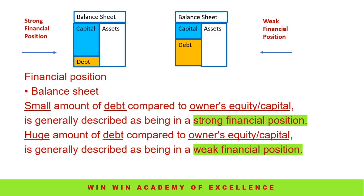Assets are on the right-hand side, and capital and debt are on the left-hand side. We have to pay the loan amount. When the debt amount is small compared to owner's equity or capital, that is called a strong financial position.